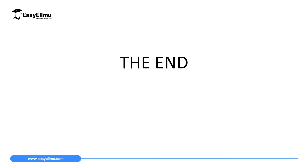That marks the end of today's lesson. In the next lesson we will discuss an image formed when an object is placed between C and F, when an object is placed between F and the pole, and when an object is placed at F. Recall that rays from infinity formed an image at F — so where will an object placed at F form its image? Stay tuned at ECLIMU Learning Simplified.